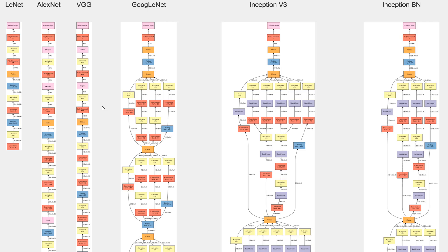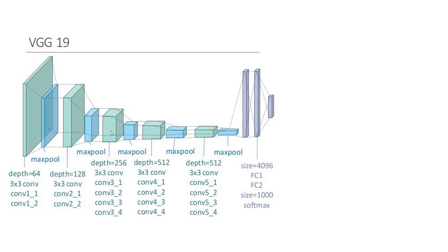Depending on what type of problem we're working on, we can put together our own neural network architecture — we can design our own. Of course, there are people getting PhDs working on these topics. But if you just want to use this as a tool to segment your images, we can still do that without being the architects of neural networks. I picked VGG because it's relatively famous, and probably has the most papers written about it.